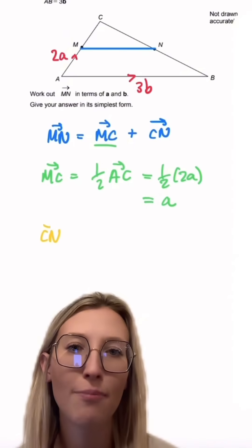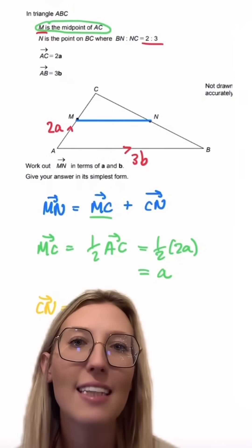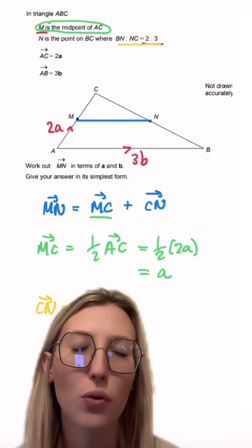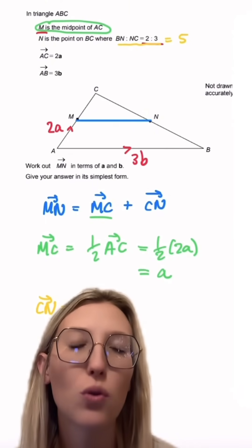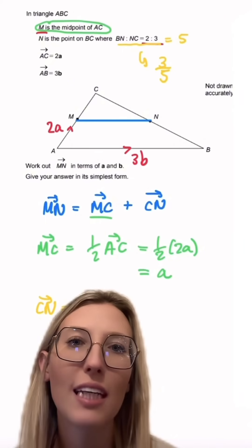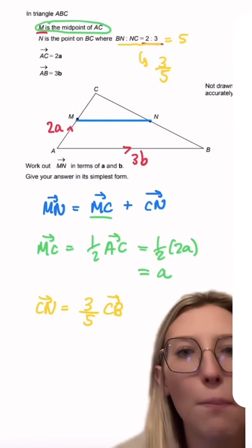Now moving on to CN. If we take a look at the ratio up here we know BN to NC is 2 to 3, which means that the NC or CN part has three parts out of a total of five. So CN must represent three fifths of the line CB.